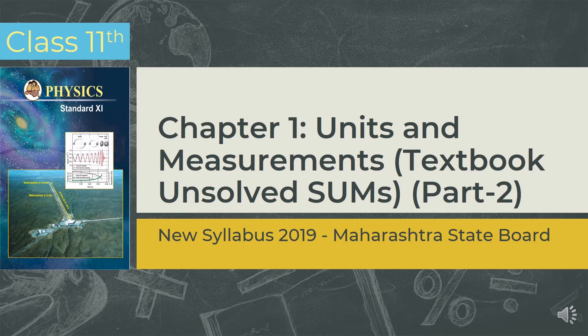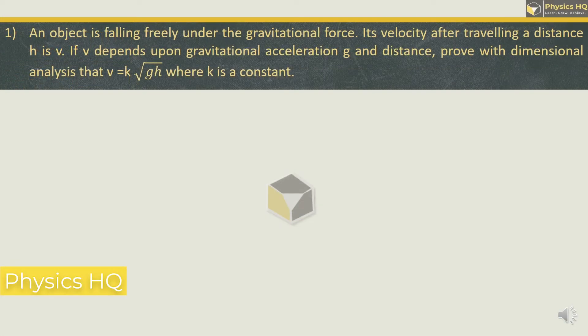Let us go ahead with the first MCQ. An object is falling freely under the gravitational force. Its velocity after travelling a distance h is v. If v depends upon gravitational acceleration g and distance, prove with dimensional analysis that v is equal to k root of gh, where k is constant. We will find out the dimensions of these things individually. Velocity's unit is meter per second, so the dimension is L¹T⁻¹ because seconds is in the denominator.